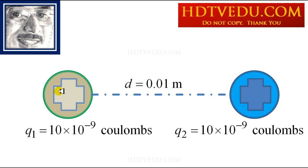This plus is going to be repelled by this plus, and this plus is going to be repelled by this plus. So there is a repulsion between these two positive charges.